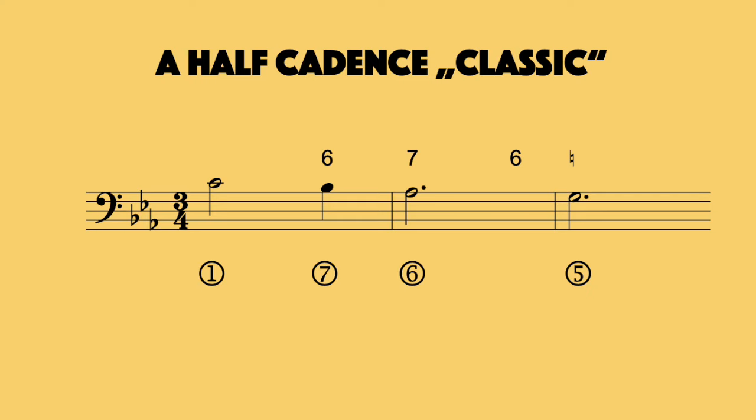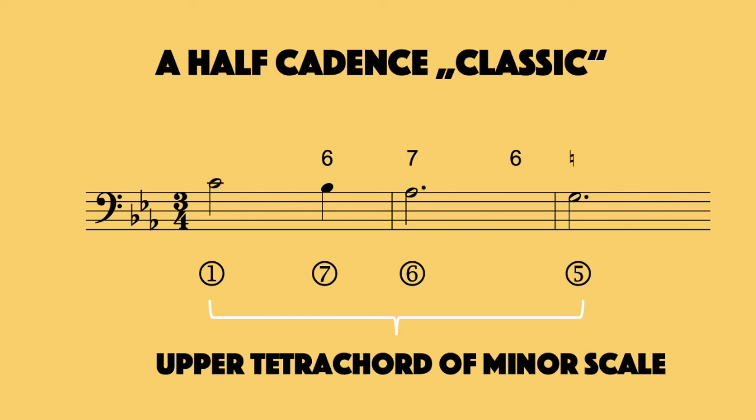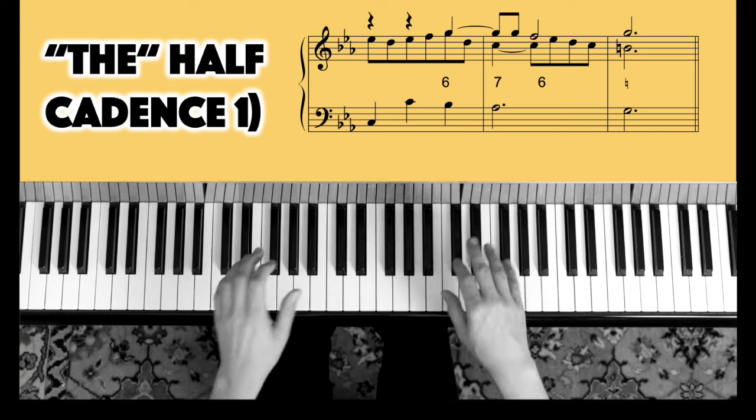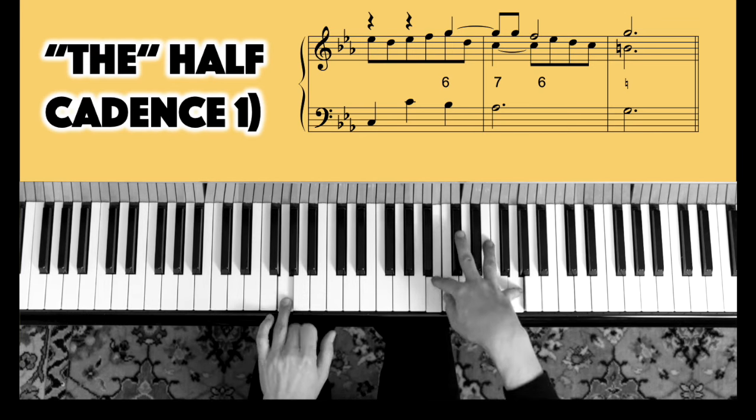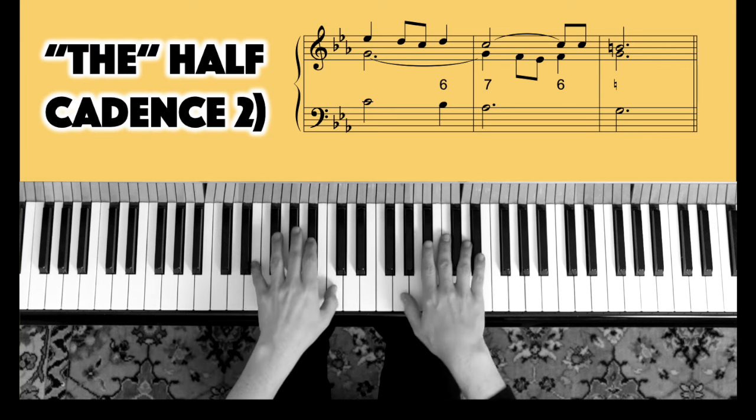And why not showing a half cadence classic as well? That bass line is basically called the descending upper tetrachord. And a typical baroque embellishment would be the 7-6 suspension on the descending 6th degree. Which is a true cliché and I'm sure you've already heard this sound a hundred times. And now 7-6 in the middle voice.